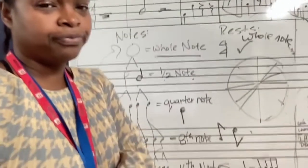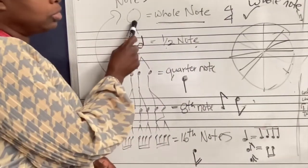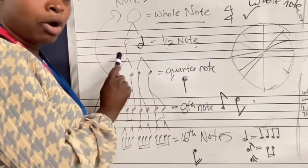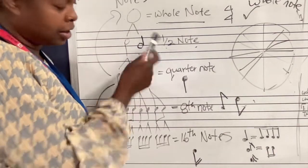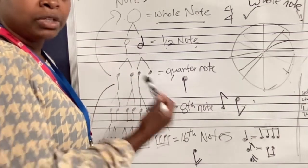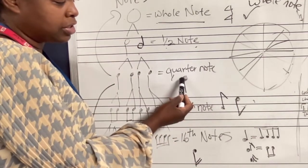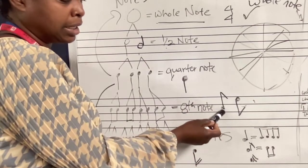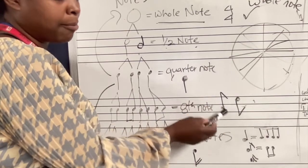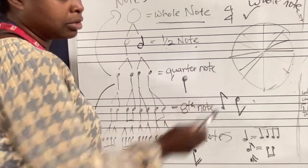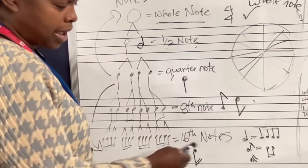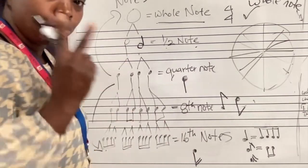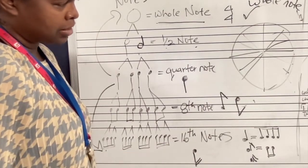Just as a recap: a whole note looks like that big circle. A half note is a smaller circle with a stem either up or down. A quarter note is a filled-in circle with the stem up or down. An eighth note is the same filled-in note with a stem, but it has a little flag on the end. And then the sixteenth note is the same — filled in with a stem — but it has two of those flags on the end.